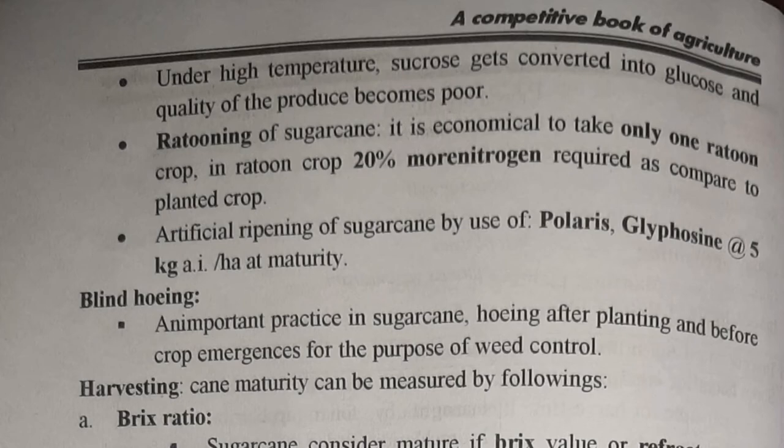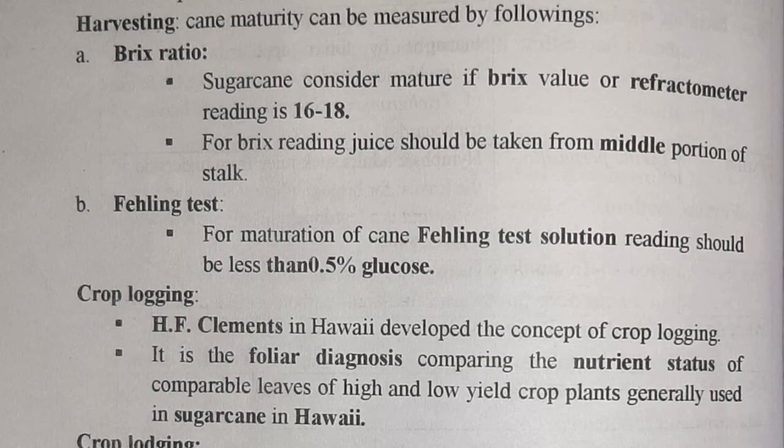Harvesting: cane maturity can be measured by two methods — Brix ratio and the Fehling test. In the Brix ratio, the Brix value or refractometer reading should be 16 to 18, and juice should be taken from the middle portion of the stalk. For the Fehling test, the solution reading should be less than 0.5% glucose for maturation of cane.